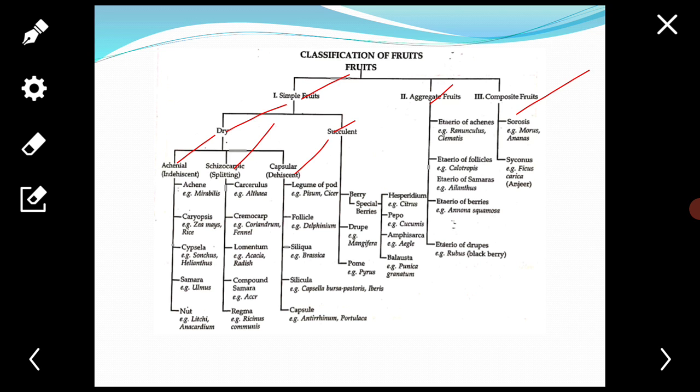The achene-like fruits: these are single seeded indehiscent fruits. They are of five kinds.